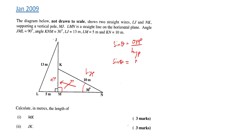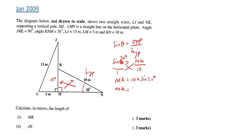So sin30° = MK/10. We can write that as sin30°/1 and cross-multiply: MK = 10 × sin30° = 5 meters.